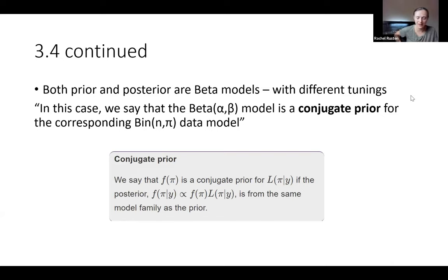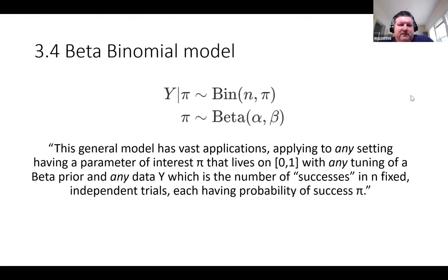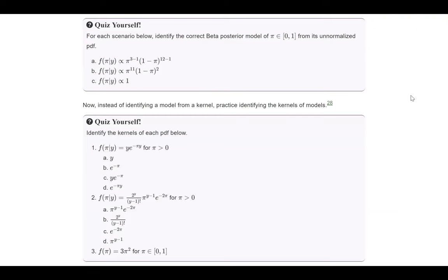That finishes it out — the rest of the chapter is just 'now simulate it in your coding platform of choice,' and then it goes straight into the exercises. I'll post in Slack the Wikipedia page on conjugate priors because there's a whole table of them — we won't go into it but just for fun you can see there's a bunch of extra conjugate pairs.